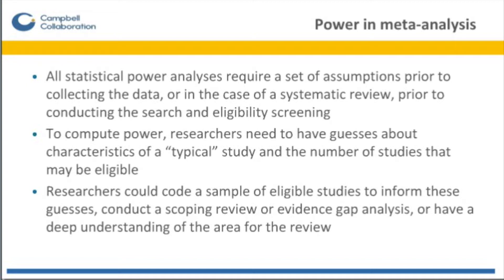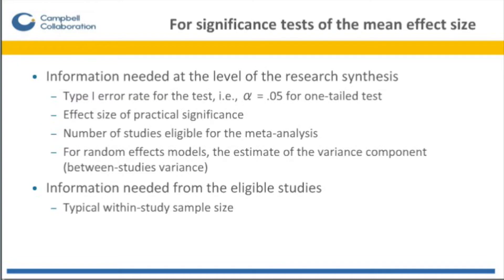Researchers might get those guesses by coding a sample of eligible studies for the review to inform those guesses. They might conduct a scoping review or an evidence gap analysis. Or they may have a deep understanding of the primary studies that are likely to be included in the review. In order to conduct power analysis for significance tests of the mean effect size in a meta-analysis, there is information you need both at the level of the research synthesis itself and from the primary studies that you think are going to be in the review.